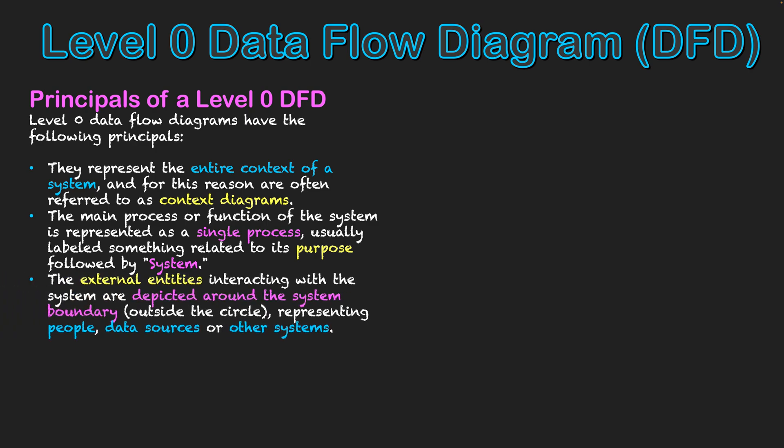Thirdly, external entities are interacting with the system and they are depicted around the system's boundary. So hence they are outside the circle that represents the system. And external entities can represent a variety of things such as people, data sources, or other systems where data can be going to or coming from, or processed into information and sent back to. They are the actual sources that we are translating this data into information for.